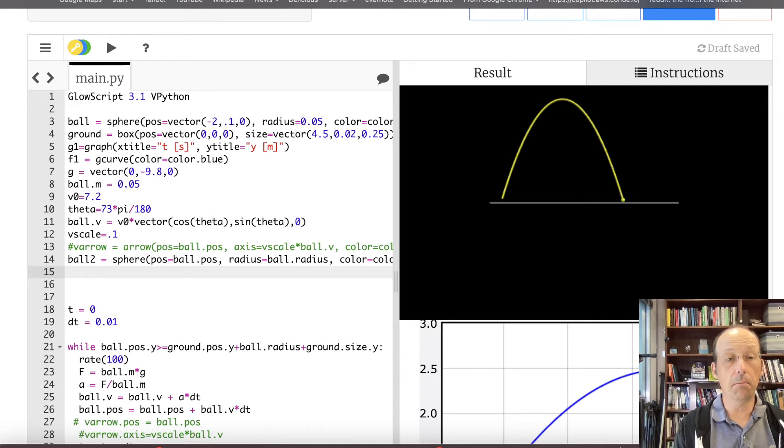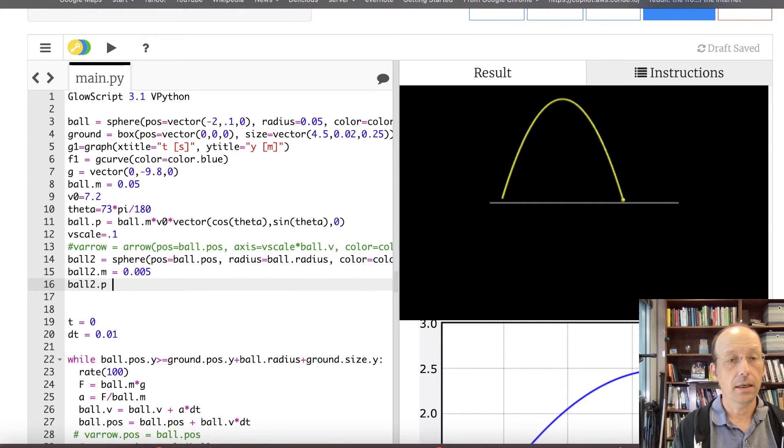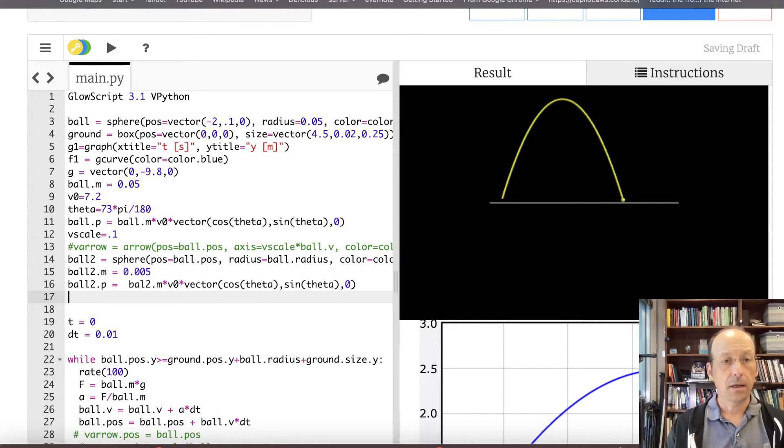Now I need to give it a momentum. I need to give this one a momentum too. So let's say ball dot p equals all this times ball dot m times that. Ball2 dot m equals, let's make it super, that one is 50 grams. Let's make this one 5 grams. Ball2 dot p equals, I've got to do the same thing. Let's copy that and put ball2. Same velocity. I think we're good.